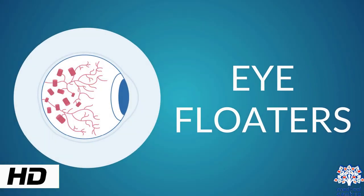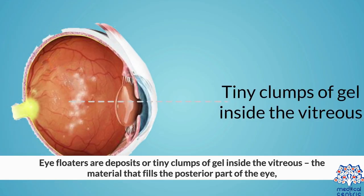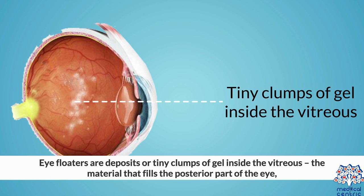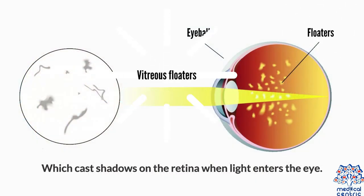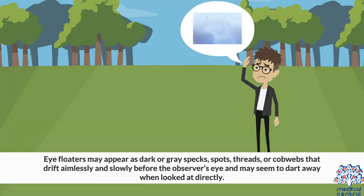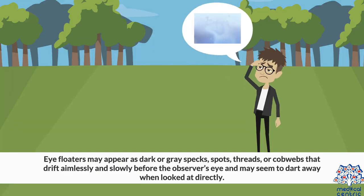Today's topic is eye floaters. Eye floaters are deposits of tiny clumps of gel inside the vitreous — the material that fills the posterior part of the eye — which casts shadows on the retina when light enters the eye. Eye floaters may appear as dark or grey specks, spots, threads, or cobwebs that drift aimlessly and slowly before the observer's eye, and may seem to dart away when looked at directly.